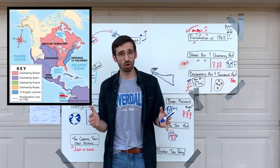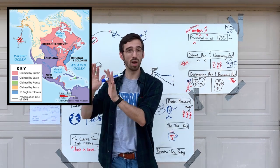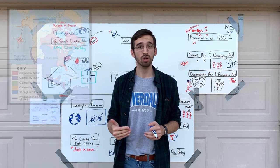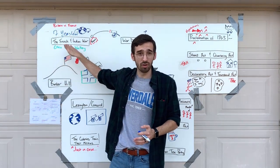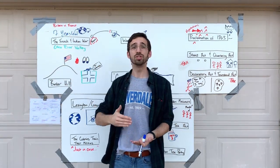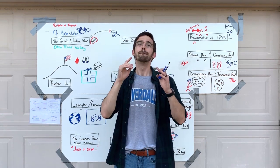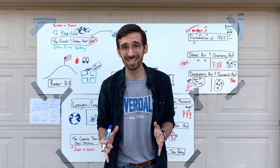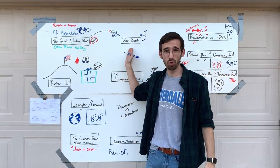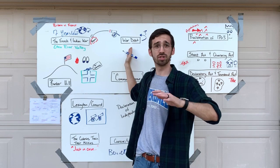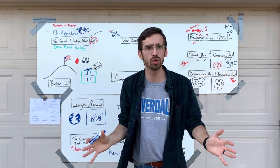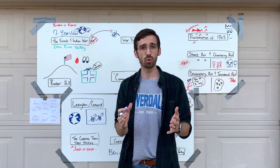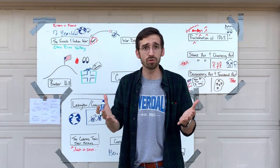What Britain gets out of all of this is all of the land west of the Appalachian Mountains going all the way to the Mississippi River — which includes the Ohio River Valley, what the colonists wanted in the first place. But they also get a whole lot of war debt, because it turns out a global war lasting seven years is incredibly expensive. Britain is in debt, and they're asking: who's going to pay for this?